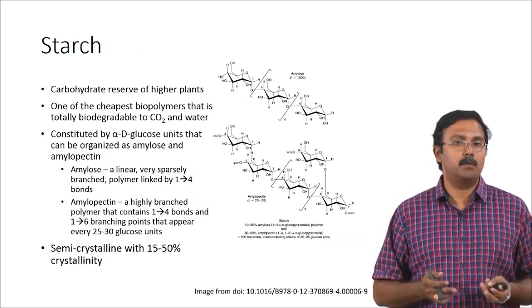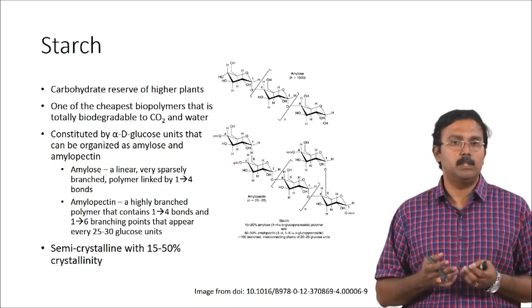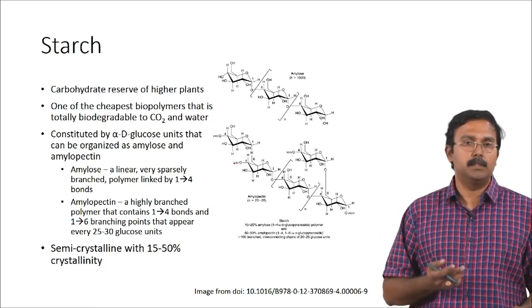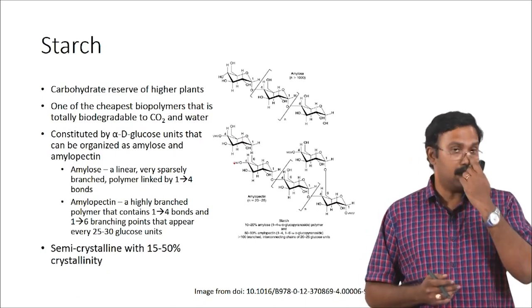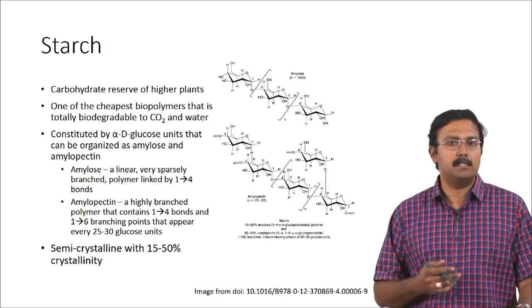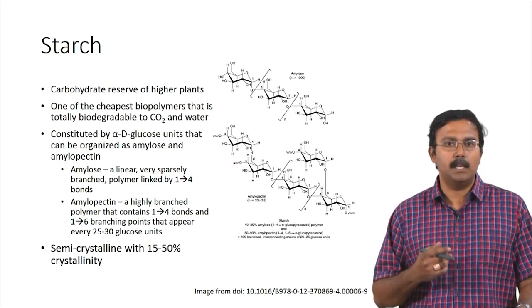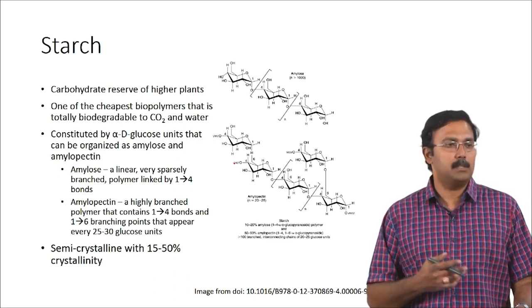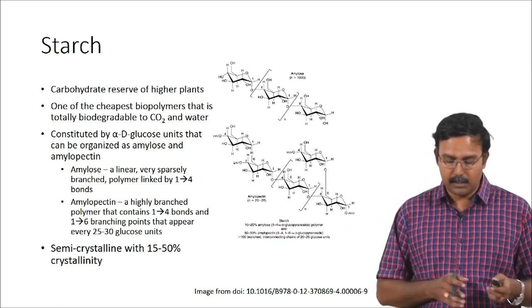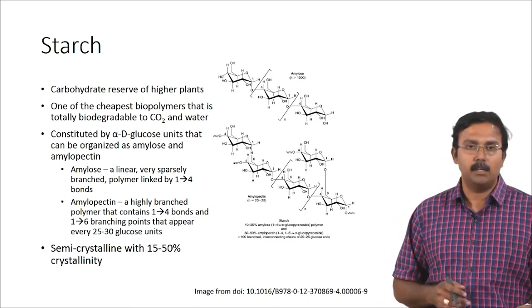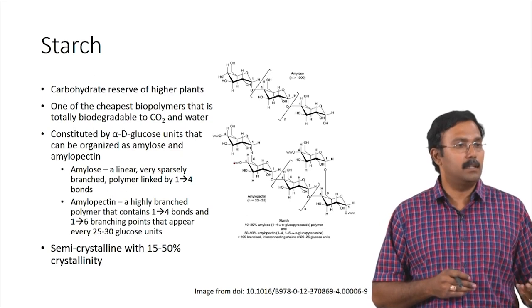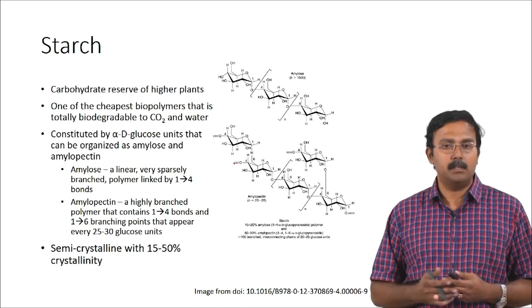Starch is another carbohydrate molecule — it is actually a carbohydrate reserve for higher plants and is one of the cheapest biomaterials available that is also biodegradable. It is completely degradable to form carbon dioxide and water. It basically contains alpha-D glucose units that can be organized as amylose and amylopectin. Amylose is a linear, very sparsely branched polymer linked by 1,4 glycosidic bonds, and amylopectin is a highly branched polymer that contains 1,4 bonds and 1,6 branching points appearing for every 25 to 30 glucose units. Starch has also been used along with other polymers for tissue engineering applications.